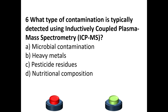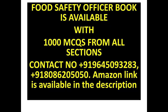Sixth question: What type of contamination is typically detected using inductively coupled plasma mass spectrometry (ICP-MS)? Options: microbial contamination, heavy metals, pesticide residues, nutritional composition. Your answer is option B: Heavy metals.